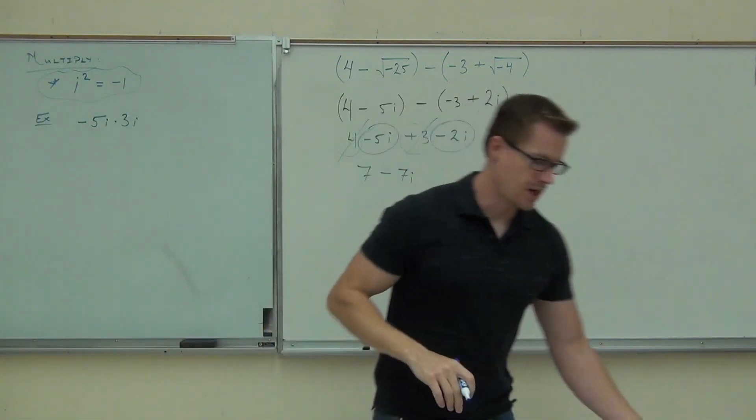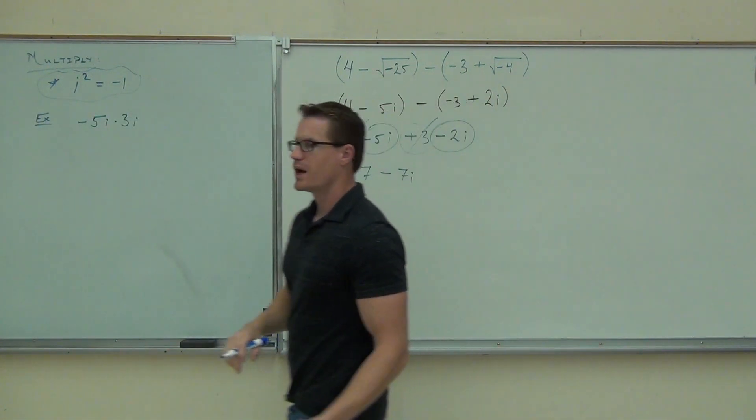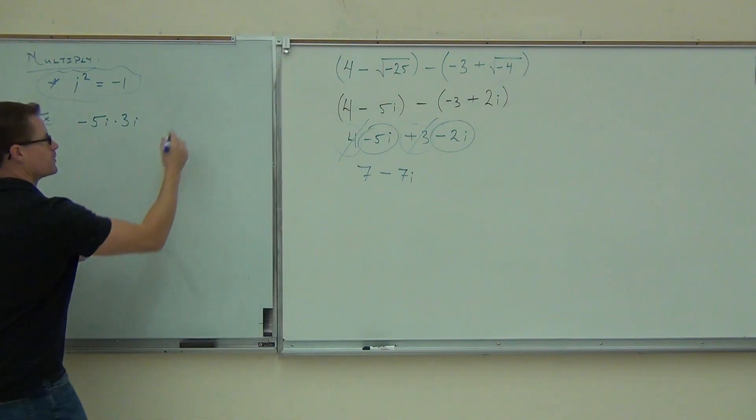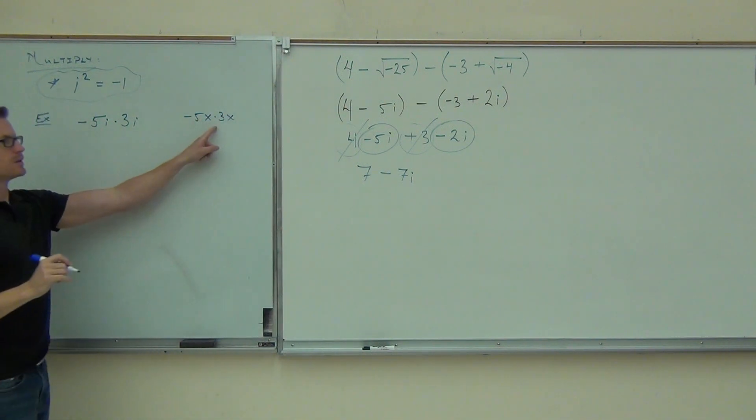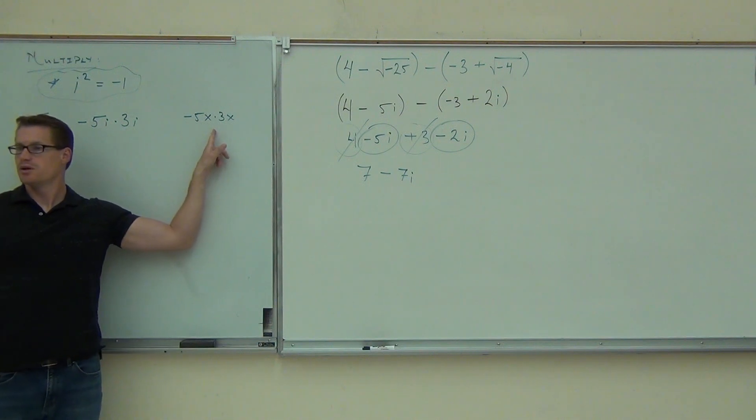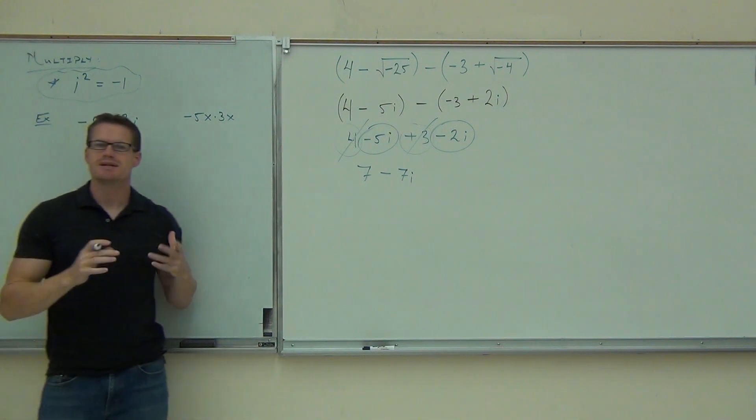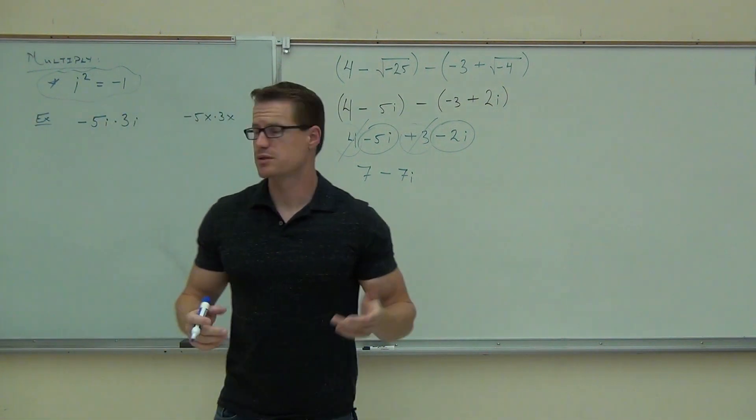Negative 5i times 3i. Well, hey, if you can do this problem, which you've done before many times, right? You can do this problem because it's the same exact idea. You're multiplying two things.